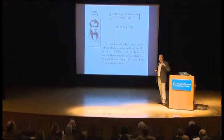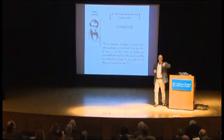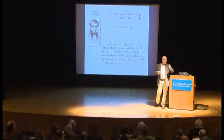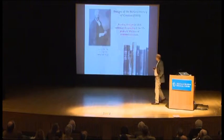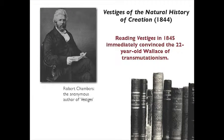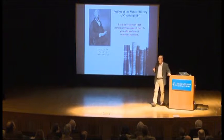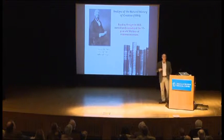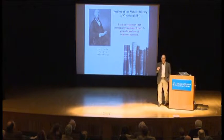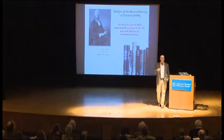Wallace, unlike Darwin the reluctant evolutionist who almost against his expectations comes around to species change, was the eager convert — something of a more revolutionary personality. A single reading of Chambers' scandalous Vestiges of the Natural History of Creation convinces him of the truth of transmutationism.